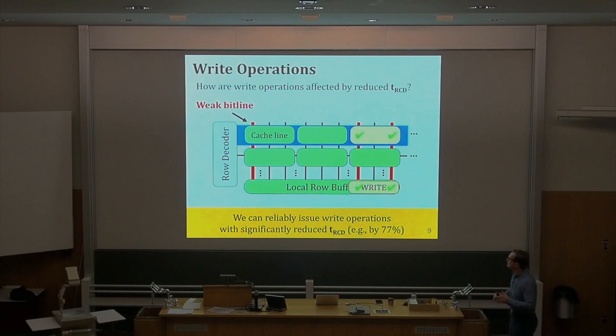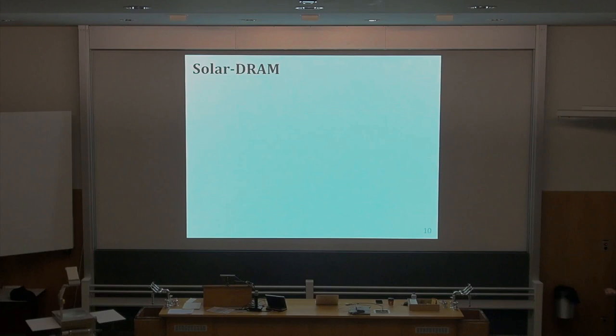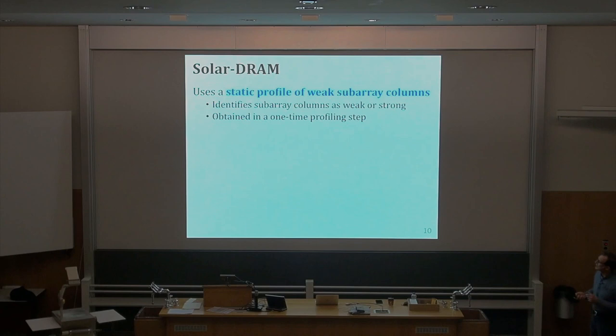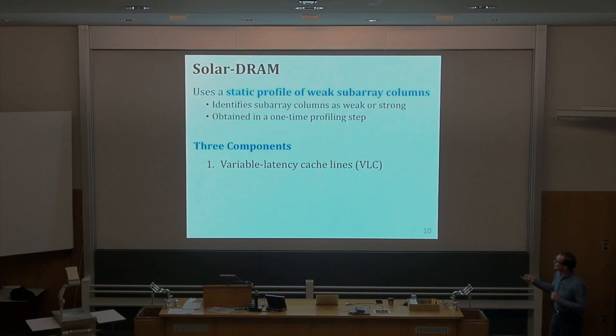Experiments from real LPDDR4 chips show you can reduce activation latency by 77% when doing writes. You cannot do this on a read because you need to ensure the data you get is correct. The idea of SOLAR DRAM based on these observations is to use a static profile of weak sub-array columns, with a one-time profiling step — though dynamic profiling at coarse-grained intervals is safer. There are three components: variable latency cache lines, reordered sub-array columns, and reduced latency for writes.